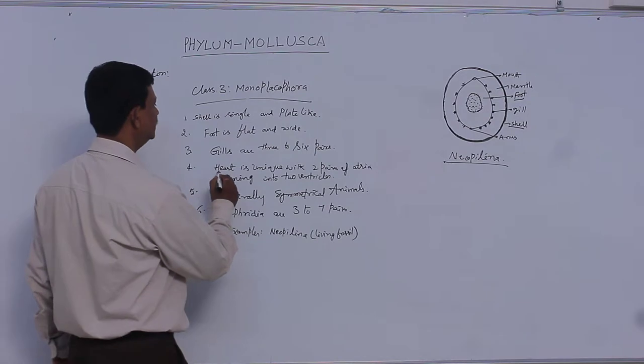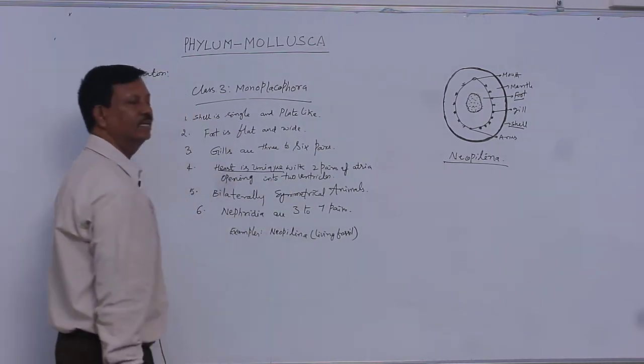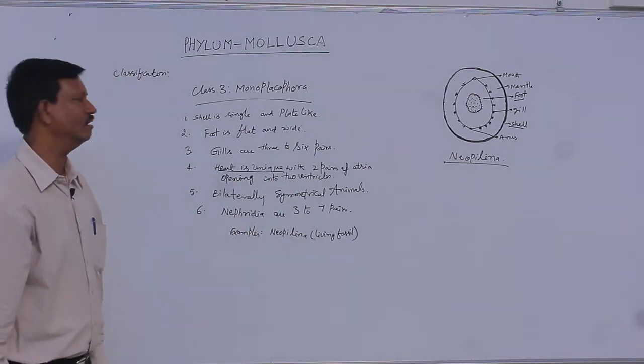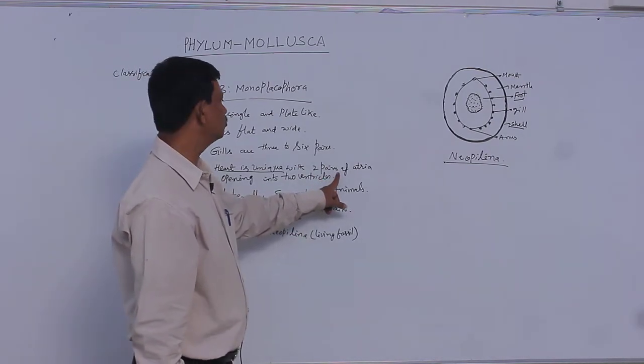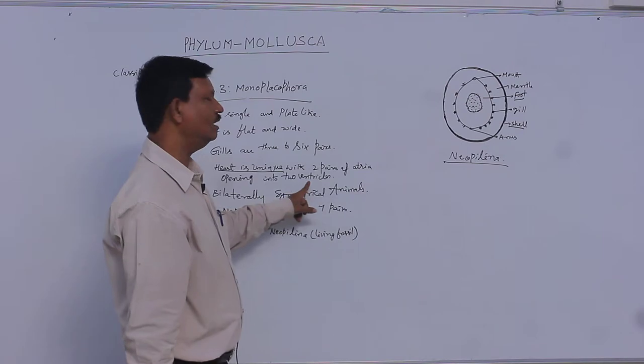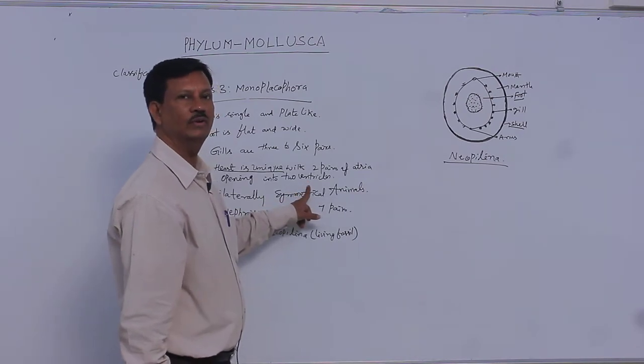Heart: a unique type of heart is present. It is not present in any other classes. Here, two pairs of atria are present. These two pairs of atria are opening into two ventricles.